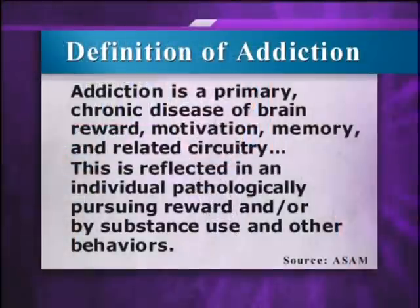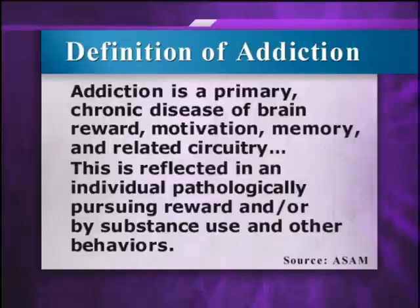Hello, I'm Stan Rhodes. Thanks for joining us. Today we're going to look at the origins of addiction to help us better understand the disease, the science behind it, and where it comes from. According to a definition from the American Society of Addiction Medicine, addiction is a primary chronic disease of brain reward, motivation, memory, and related circuitry. The definition continues to say this is reflected in an individual pathologically pursuing reward and/or relief by substance use and other behaviors.